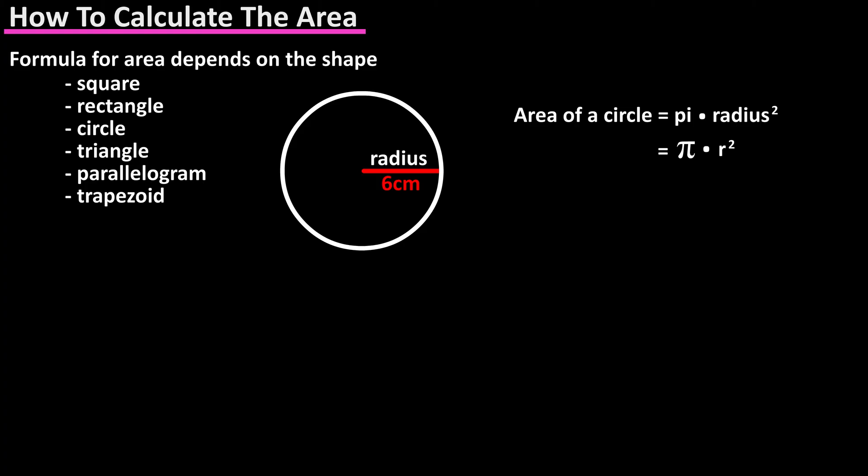The formula for calculating the area of a circle is pi r squared. Pi is a constant that is approximately equal to 3.14. R is the radius of a circle, which is half of the distance across the circle. So in this example, the radius is 6 centimeters, and using the formula we have approximately 3.14 times 6 centimeters squared, which equals approximately 113.04 centimeters squared.